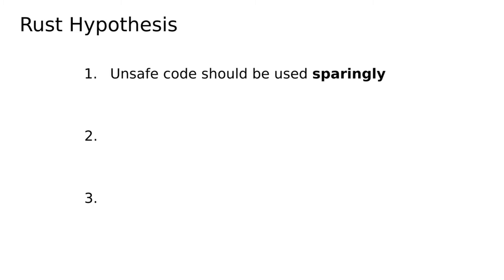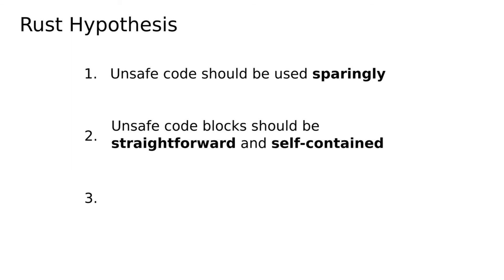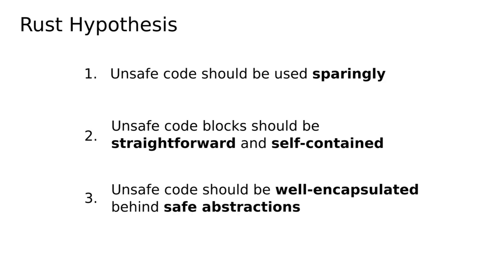Unsafe code should be used sparingly in order to benefit the guarantees inherently provided by safe Rust. Unsafe code blocks should be straightforward and self-contained to minimize the amount of code that developers have to vouch for — for example, through manual reviews. Unsafe code should be well encapsulated behind safe abstractions — for example, libraries that use unsafe Rust internally should not expose public unsafe functions.